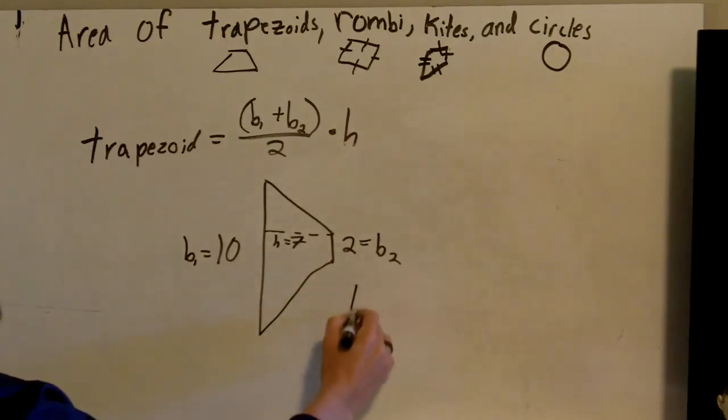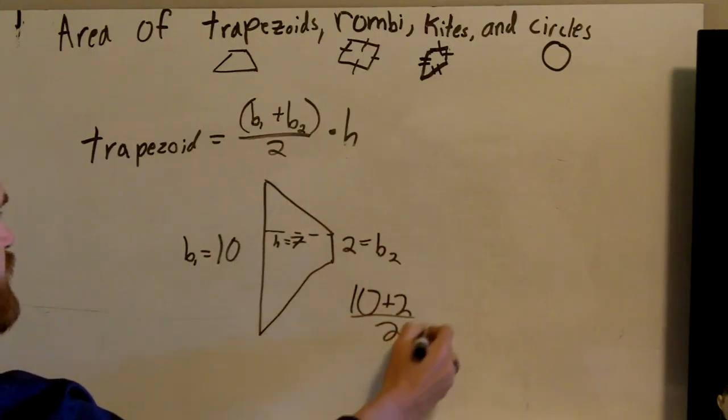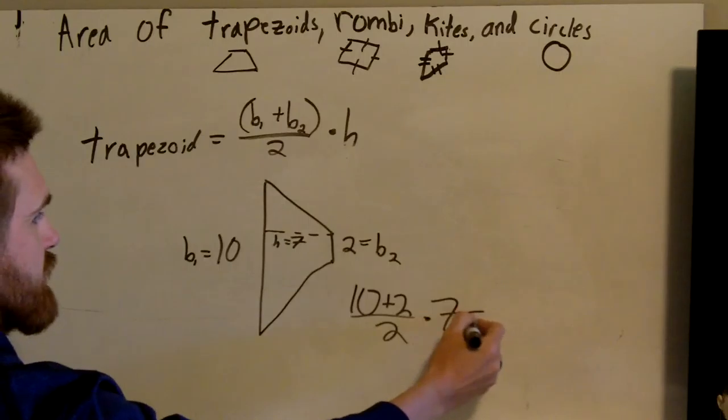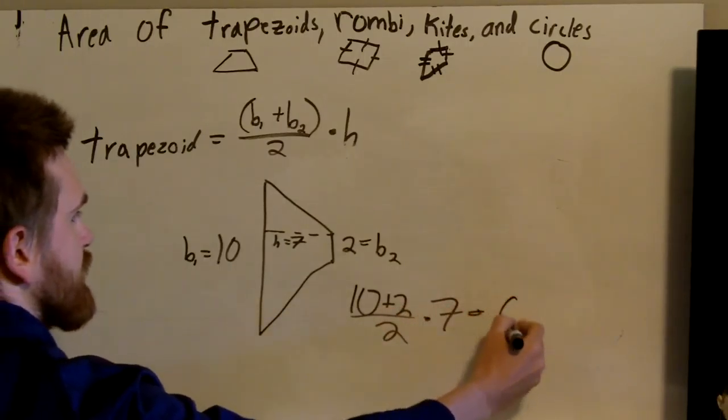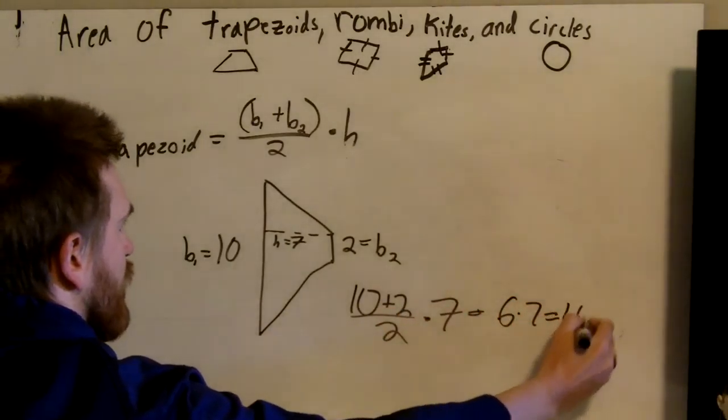So I'm going to do ten plus two divided by two times seven. Ten plus two is six, or twelve, divided by two is six. Six times seven is forty-two.